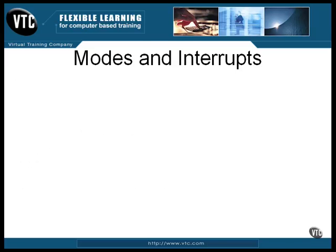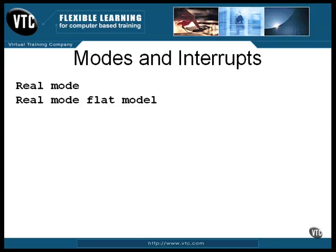The computer can be operated in different modes. The mode determines how much memory can be addressed and where that memory is located. In real mode, it's only possible to address 64K of memory at any one time. The flat model uses 16-bit addressing, so it can only address 64K of memory. The segmented memory model makes it possible for the CPU to address a total memory space of one megabyte, but it uses a 16-bit address, so it can only get to a 64K chunk of that one megabyte at any one time.